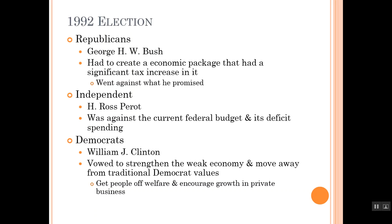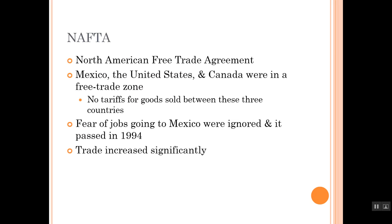Bush is going to go up against an independent named H. Ross Perot, who was against the current federal budget and its deficit spending. Perot will be very successful early on, but he will drop out of the race in the months leading up to the election because of pressure from both sides. He'll try to re-enter the race, but he'll never regain his earlier popularity. Democrats are going to nominate Bill Clinton, who vowed to strengthen the weak economy, move away from traditional Democratic values, get people off welfare, and encourage growth in private business. In 1992, Bill Clinton will win the election.